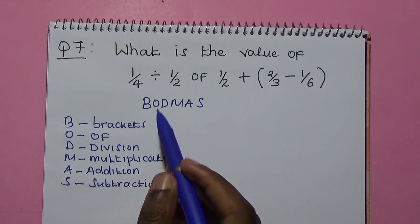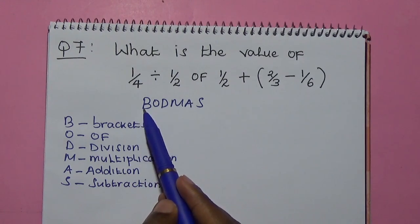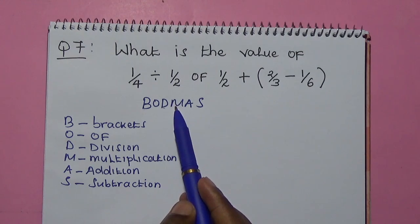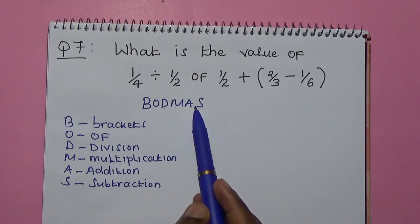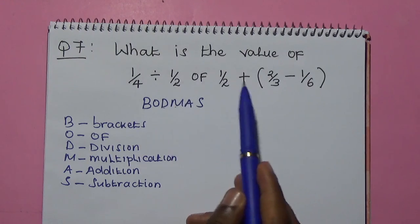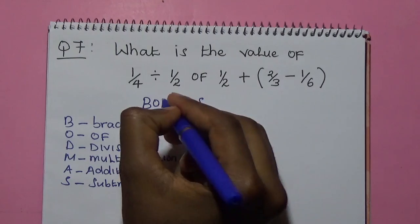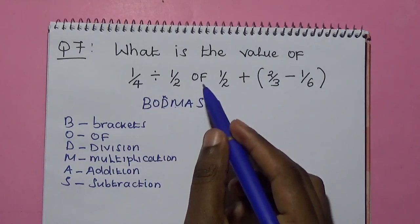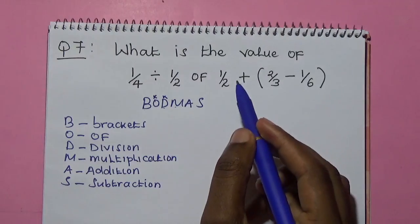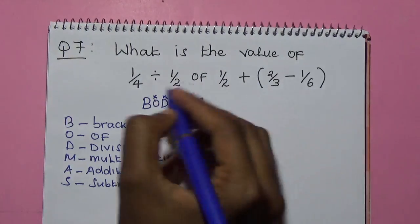When you are using BODMAS, you follow this order. You start with the brackets, then of, then division, multiplication, addition, and subtraction. In our question, we have division, we have of, then we have addition and we have the brackets.